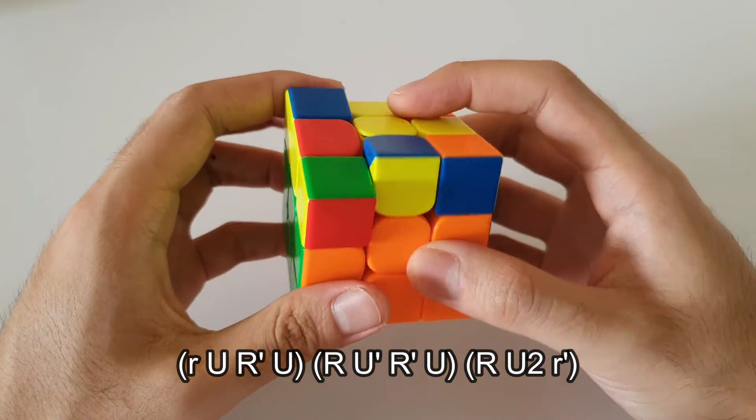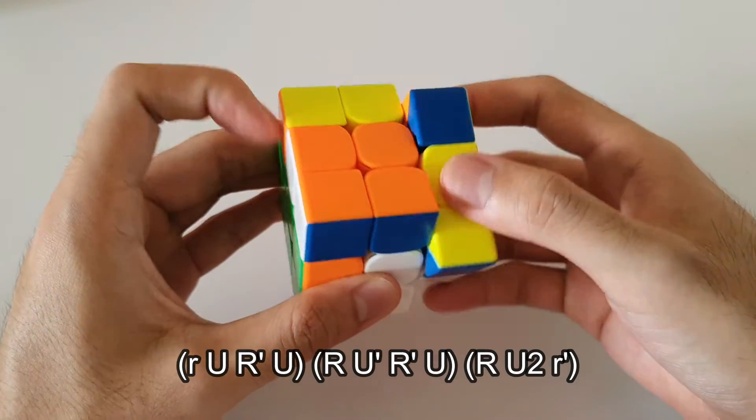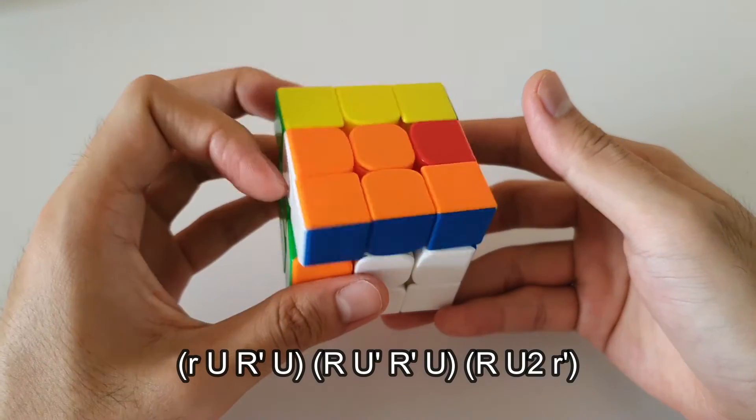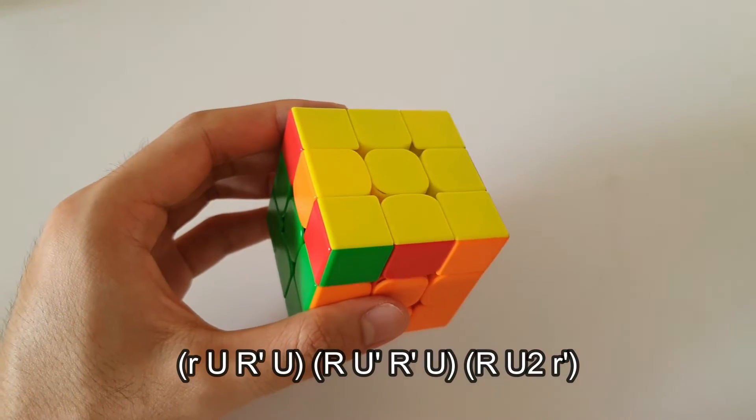So as mentioned, the first move is the wide R move. The rest of the algorithm is all the same until the very end where you end off with a wide R prime like that. And that solves that OLL case.